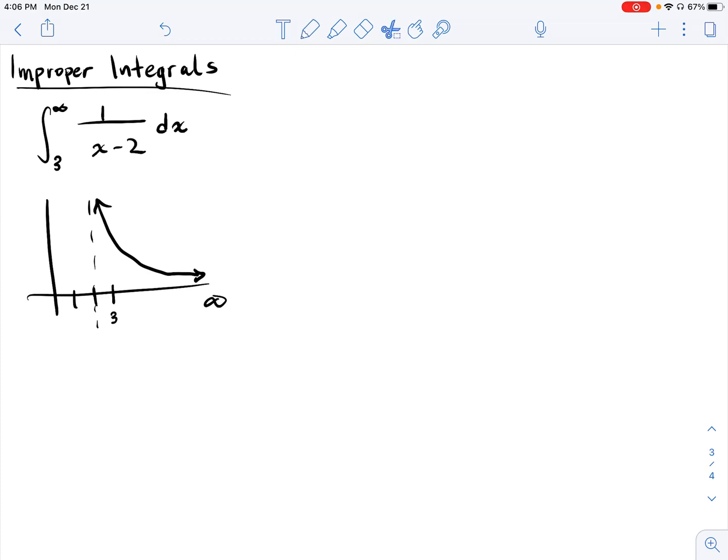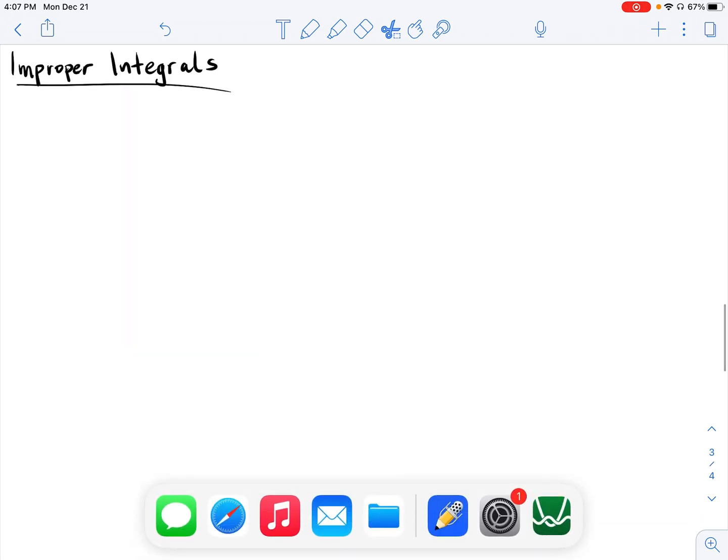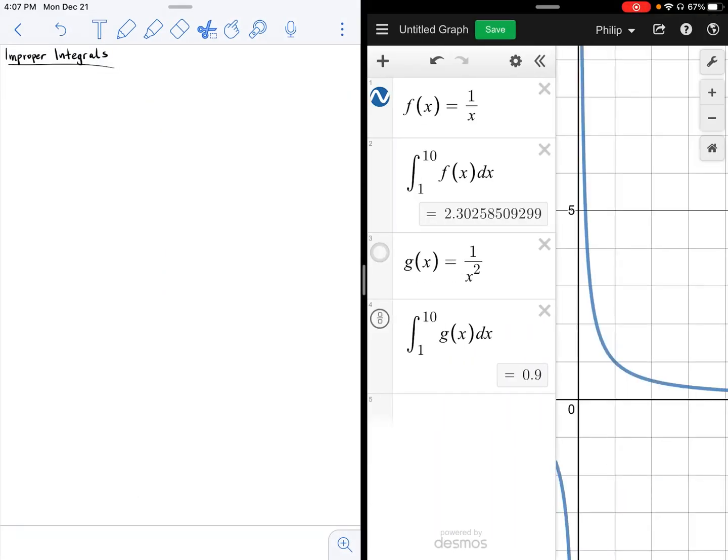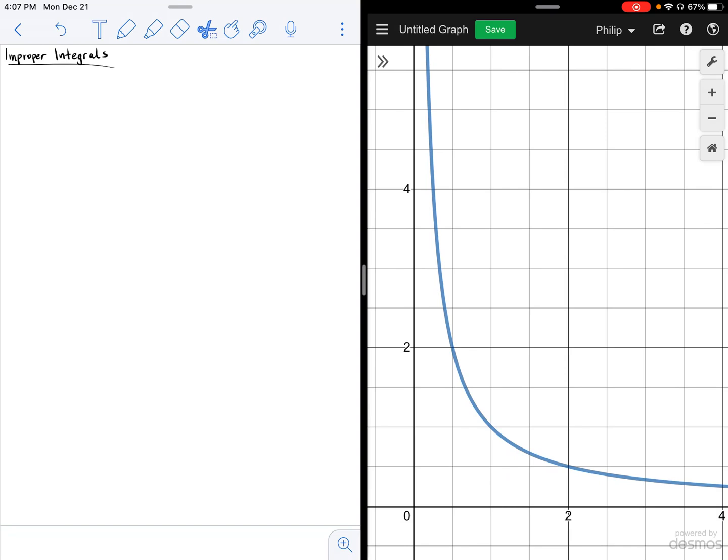So we're going to start by actually looking at an easier example. Let's start by looking at a function such as 1 over x. We already know that the antiderivative of 1 over x is the natural log of x plus c. So if we wanted to integrate this function 1 over x, which would result in the natural log of x plus c, the definite integral would be equivalent to asking ourselves, what is the area underneath this curve?